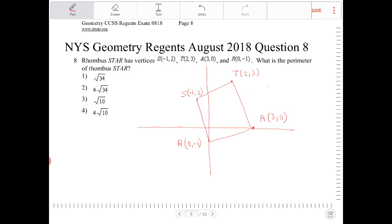So looking at this, TA is going to be the square root of (3 minus 2) squared plus (0 minus 3) squared. And what is that?